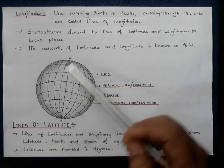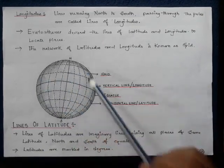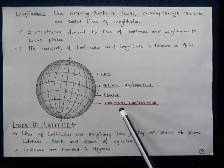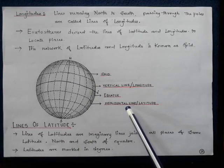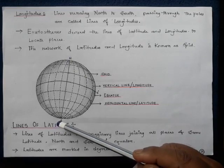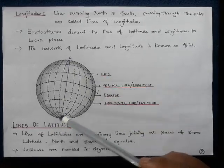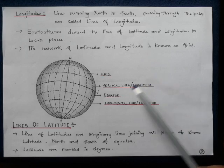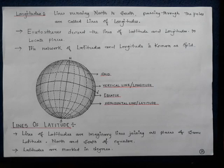Latitudes are the horizontal lines, also called parallels. The vertical lines radiating from or intersecting at the poles are known as longitudes or verticals — they are also known as meridians. A geographer known as the earth's thinness devised the lines of latitudes and longitudes to locate places, so the network of latitudes and longitudes is known as grids.